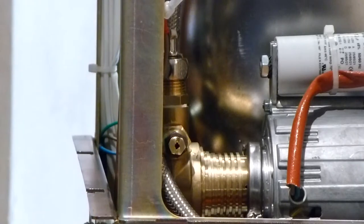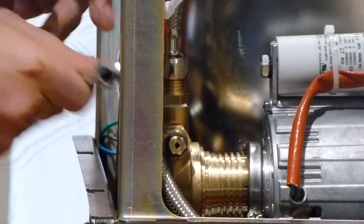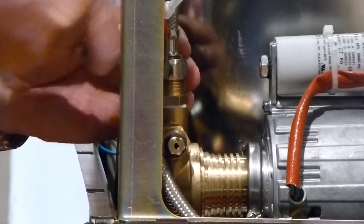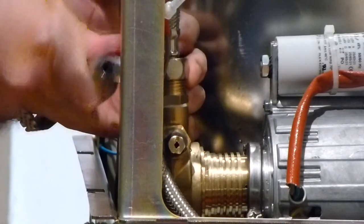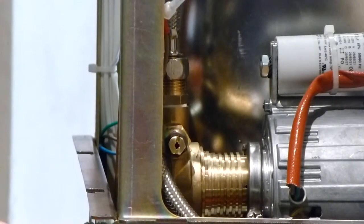Once you've got your hand tight, you can then tighten it with your crescent. And you've just replaced your pump.